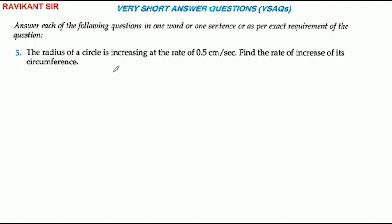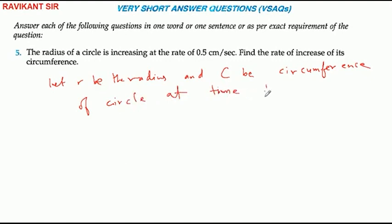Let's see. Let R be the radius and C be the circumference of the circle at time T.